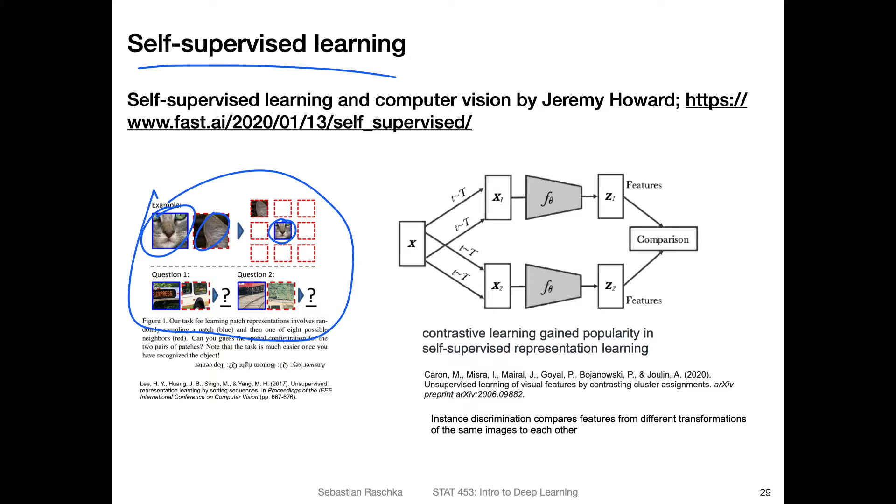The network should predict the position of the ear, whether it's in the upper left corner, upper right corner, and so forth. By that you teach the network to understand better the object structure of the cat, what a cat looks like.